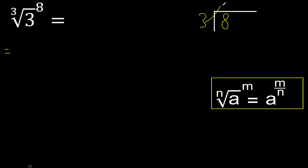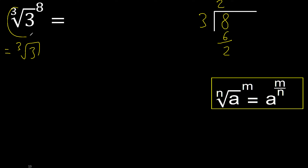3 multiplied by 3 is 9, which is greater. 3 multiplied by 2 is 6, which is not greater. 8 minus 6 is 2. Repeat: 3 multiplied by 2 is 6.